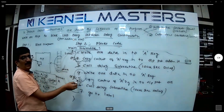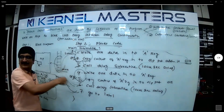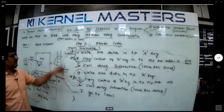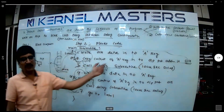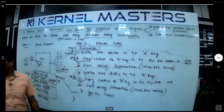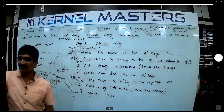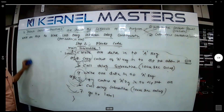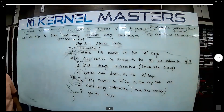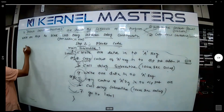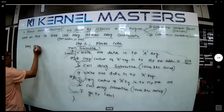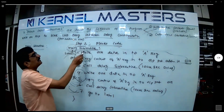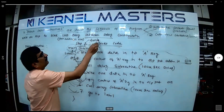LED ON, delay, LED OFF, delay — the loop never breaks. This is the main subroutine. The pseudo code for the main subroutine is complete. Next, write the delay subroutine pseudo code as well — the pseudo code is not complete yet without it. The delay subroutine — its name is 'delay.' In C programming, a subroutine is called a function.